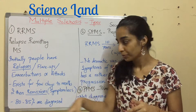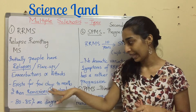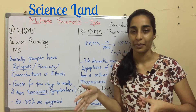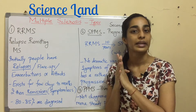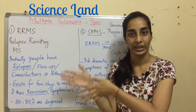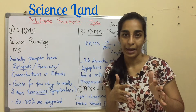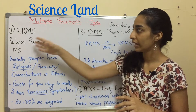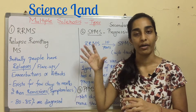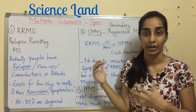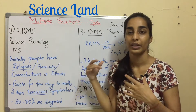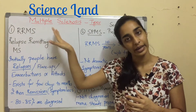This period of relapse exists for a few days to a few months, and then there is a period of remissions. What is remission? A period where there are no symptoms — symptomless. So there are alternate phases of relapses and remissions, and that's why the name RRMS. 80 to 85 percent of people diagnosed with multiple sclerosis are under this particular type — they are initially diagnosed with RRMS.